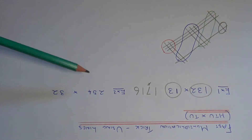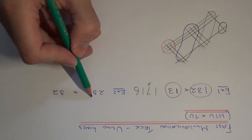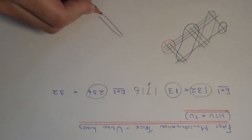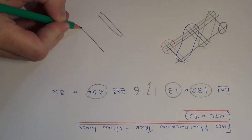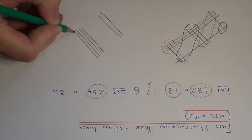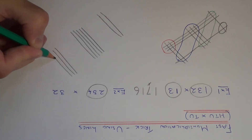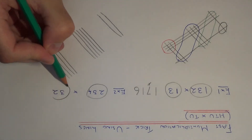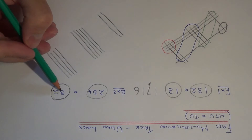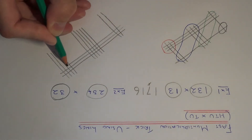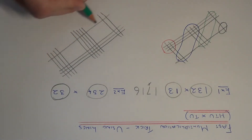So let's move on to example two. This time we have to work out 254 multiplied by 32. Let's break the first number up into diagonal lines. So we have two hundreds, so we need two lines. We then have five tens, so we need five lines. And then four units, so we need four more lines. We then need to split up the second number with diagonal lines going the other way. We have three tens, so three lines at the top, and two units, so two lines underneath.